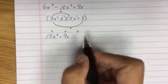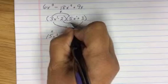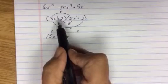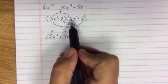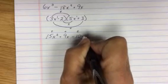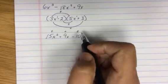The next one is the I, the innermost terms. Sign in front carries. So I have negative 2 times 5x, which gives me negative 10x.